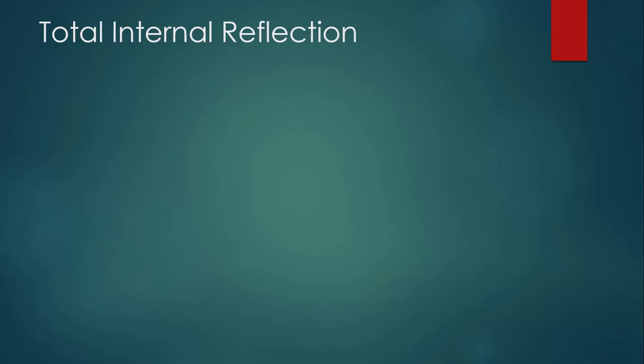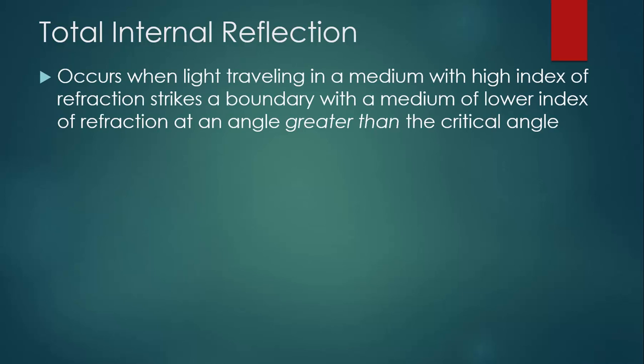Total internal reflection is a phenomenon that can occur that involves the critical angle. Total internal reflection occurs when light is traveling in a medium with a high index of refraction, and strikes a boundary with a material of lower index of refraction at an angle greater than the critical angle.